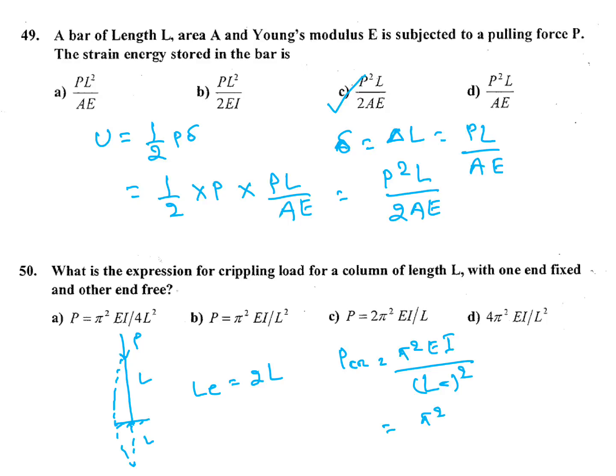So pi squared E I by 4L squared. Pi squared E I by 4L squared is the answer.